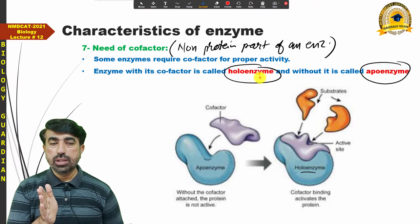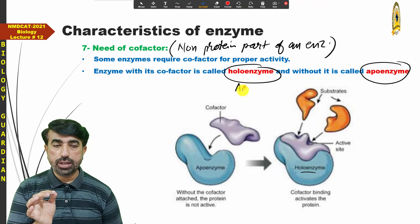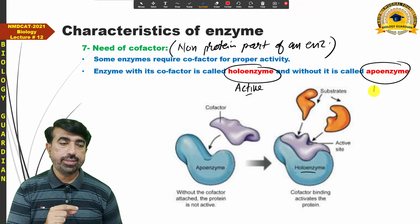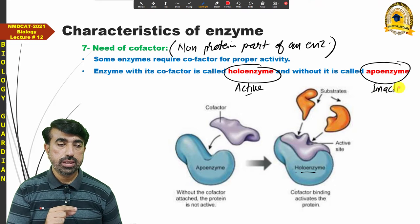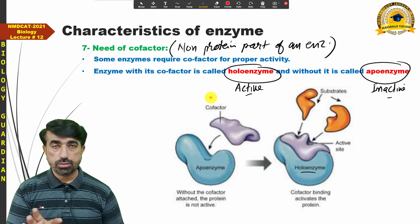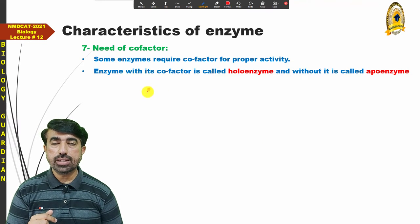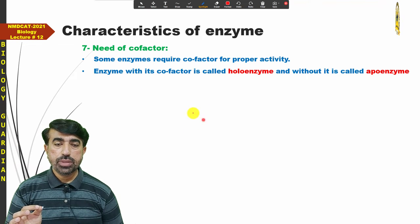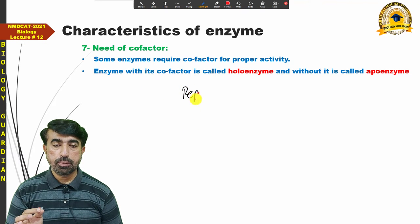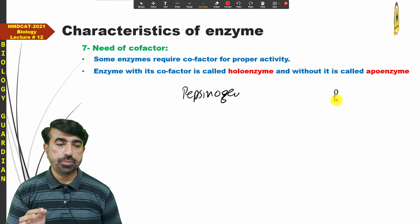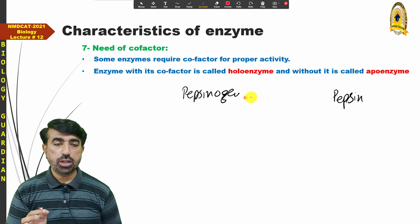A holoenzyme is actually an active enzyme, and an apoenzyme is an inactive enzyme. There are some enzymes that do not require a co-factor. For example, pepsinogen is one such enzyme — pepsinogen is converted to pepsin when it is exposed to acidic pH.